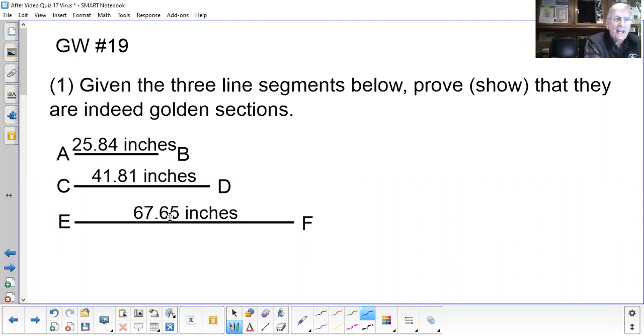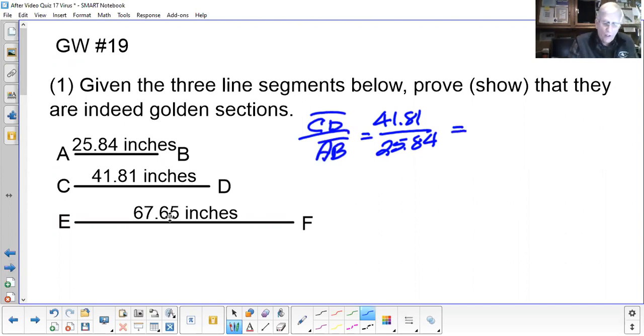So in other words, to show that AB and CD could be golden sections, we take the length of CD, 41.81, and we divide it by the length of AB. Does that indeed give us phi? Well, I'll take my calculator. If we take 41.81 and we divide it by 25.84, I get 1.618034, and that certainly looks like phi.